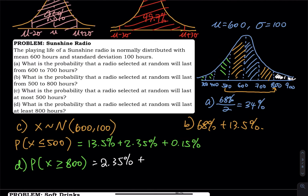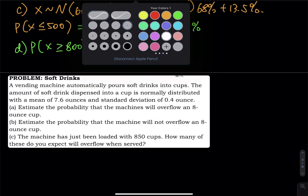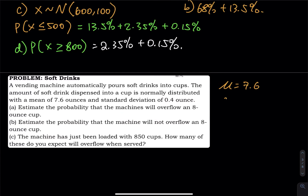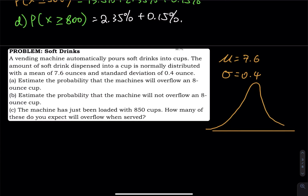Let's do one more example. A vending machine pours soft drinks into cups. The amount dispensed is normally distributed with mean mu = 7.6 ounces and standard deviation sigma = 0.4. We're asked to estimate the probability that the machine will overflow an 8-ounce cup. On the bell curve, 7.6 is in the middle; adding 0.4 gives 8, which is exactly one standard deviation to the right.